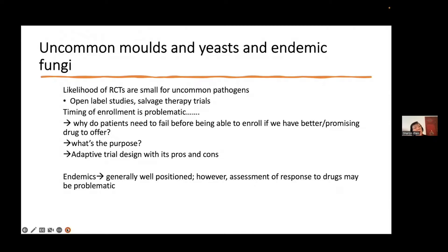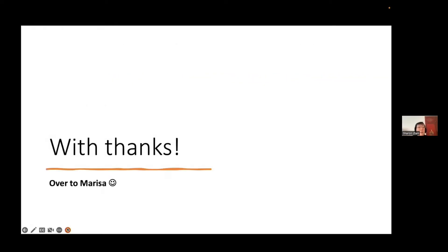For uncommon molds, yeasts, and endemic fungi, the likelihood of RCTs is small. We rely on open-label studies and salvage therapy trials. Timing of enrollment is problematic because patients often need to fail before being allowed to enroll if there is a better drug to offer. We need to think about the purpose of salvage therapy trials and consider adaptive trial design with all its pros and cons. For endemic fungi, assessment and timing of response to drugs may be problematic as they differ from invasive candidiasis or aspergillosis. That concludes Sharon's section — over to Marissa.